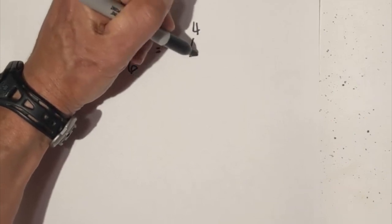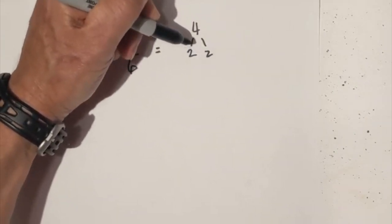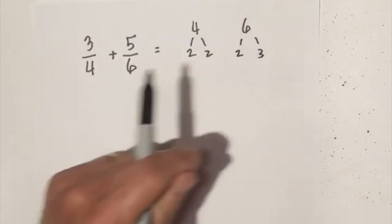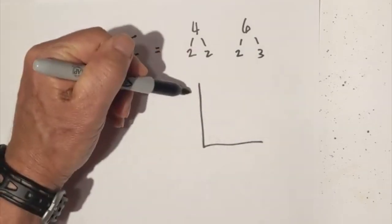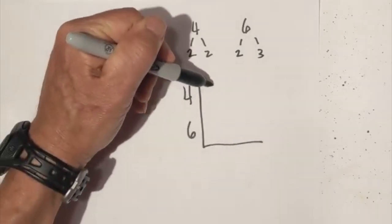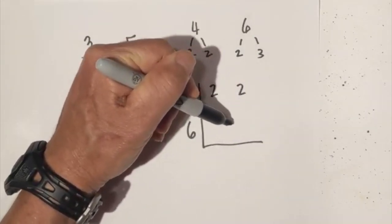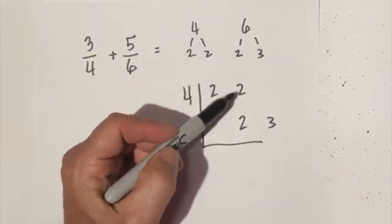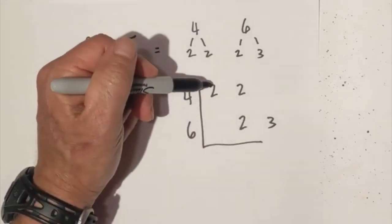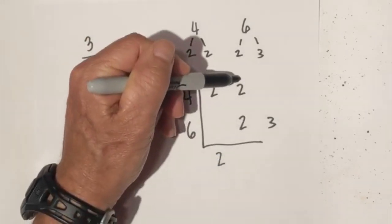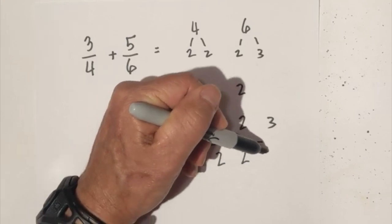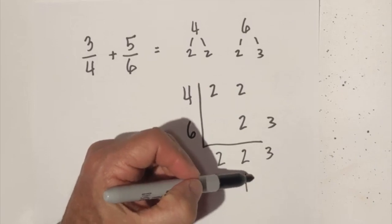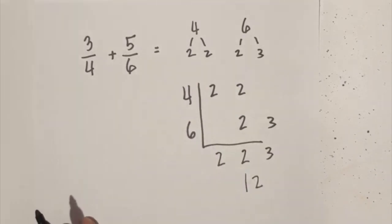I like to use a factor tree. Two times two equals four, and they're both prime. Two times three equals six, and they're both prime. I like to put them in a little chart to organize the numbers. I place two, two, and then write the two underneath the other two and then the three. The rule is bring down each number, but if you have more than one in a column, just bring down one. So that's two times two is four, and four times three is twelve. So the common denominator is twelve.